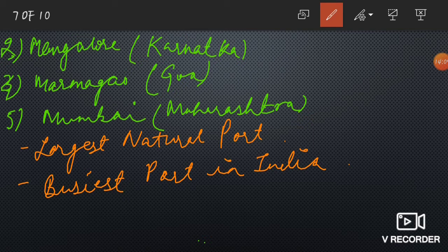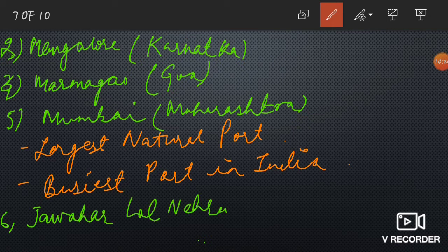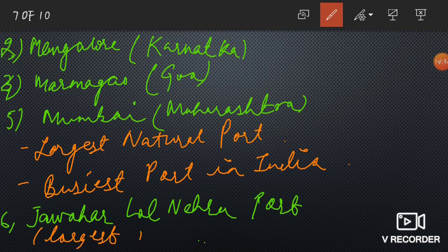Also in Maharashtra, we have another port: Jawaharlal Nehru Port, also known as Nhava Sheva. It is also located in Maharashtra. The key feature to remember is that this is the largest artificial port of India — Jawaharlal Nehru Port, Maharashtra.